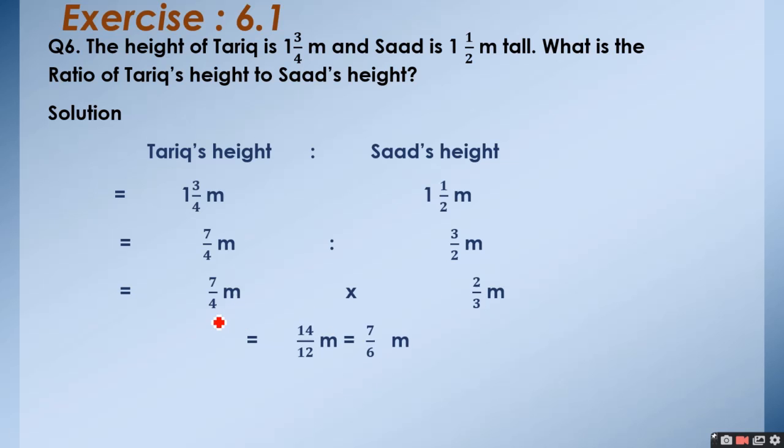Now, 7, 2's are 14 and 4, 3's are 12. We have 14 upon 12 meter. We have ratio 14 upon 12 meter.